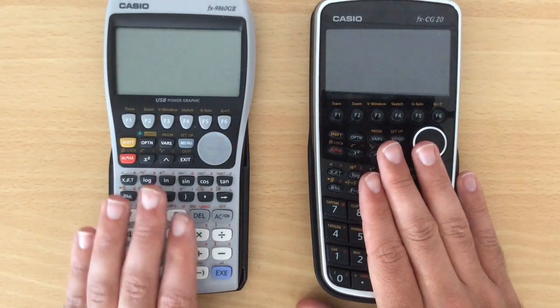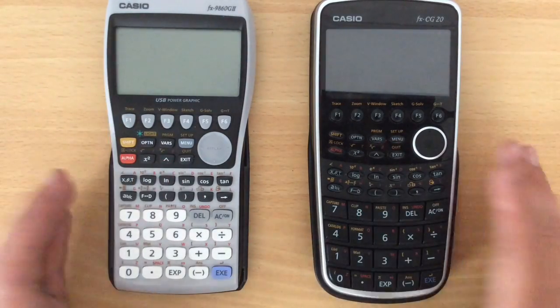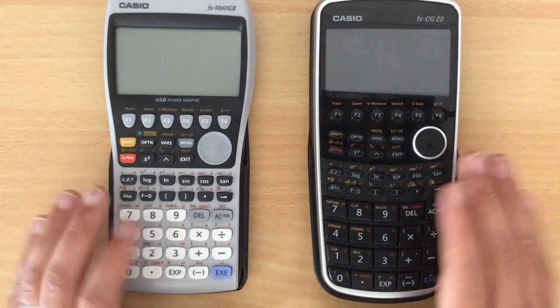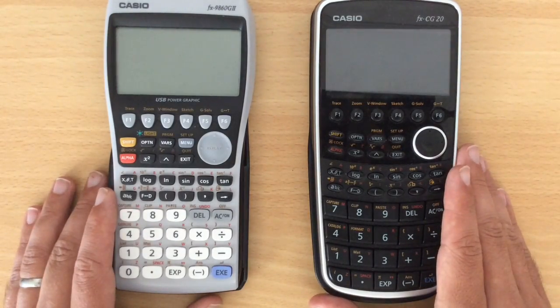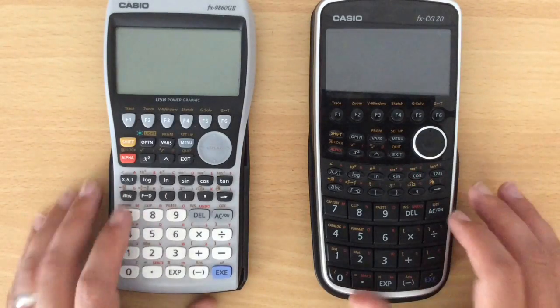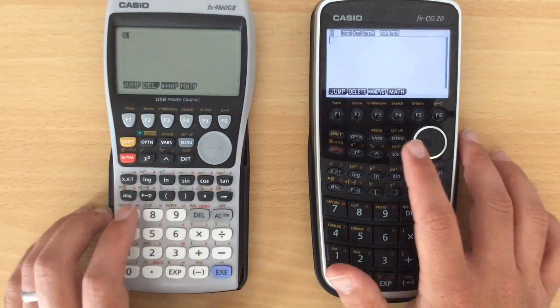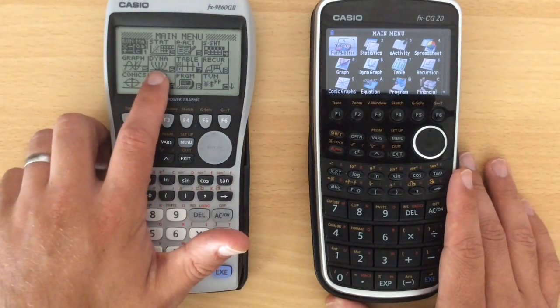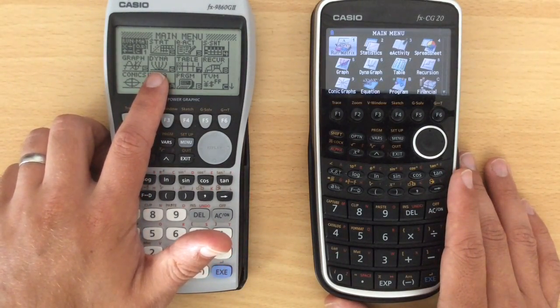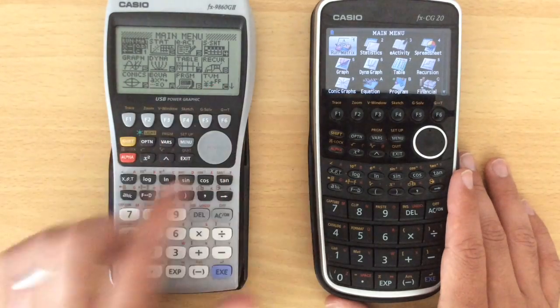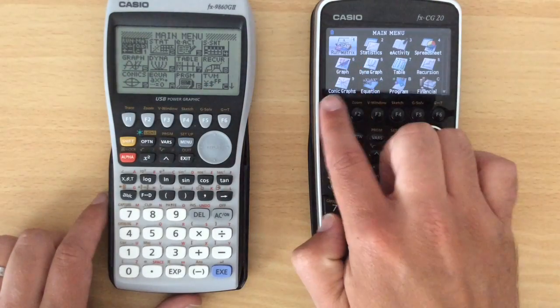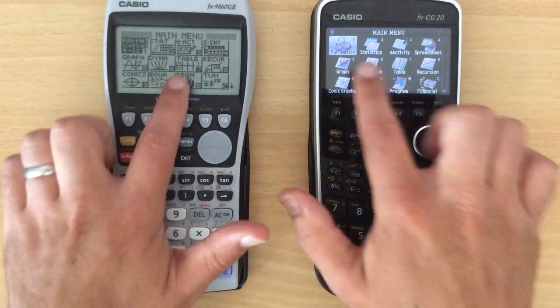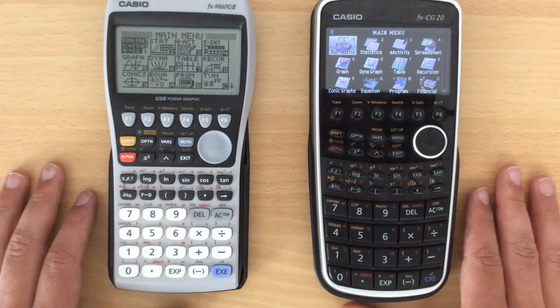For starters, this one works in color, the other one is just in black and white. Not a mathematical difference of course, but it can make things easier to see if you've got different colored graphs appearing. There's also a difference in resolution. This one has a display which is 64 by 128 as opposed to 216 by 384, and you can see immediately just on the icons that difference in resolution.